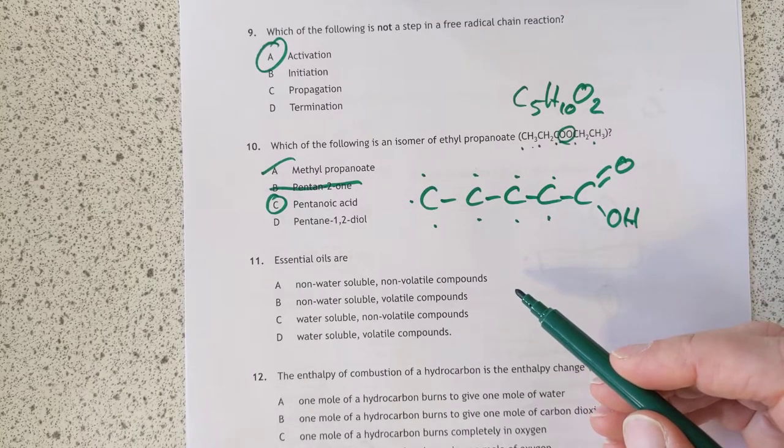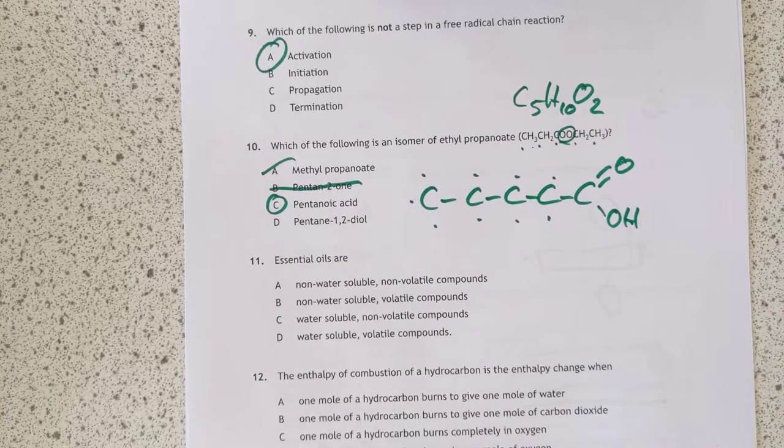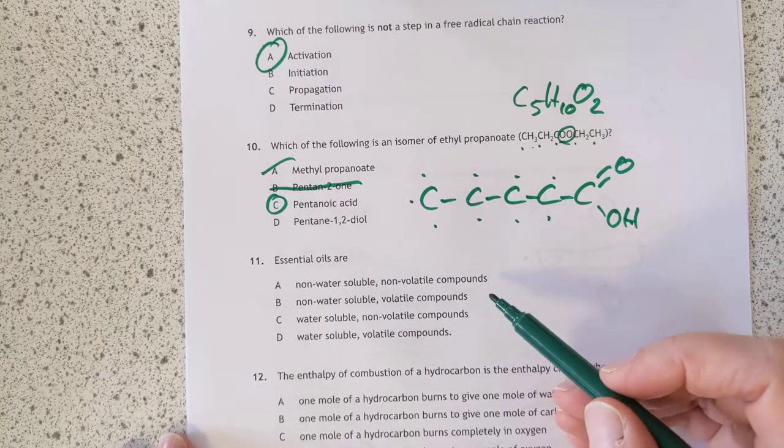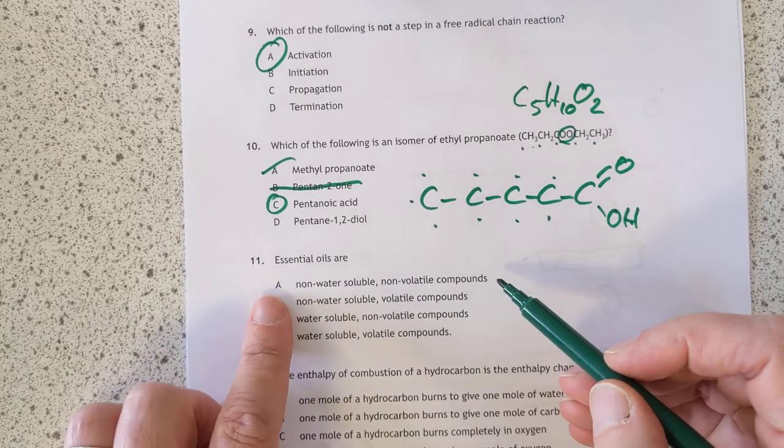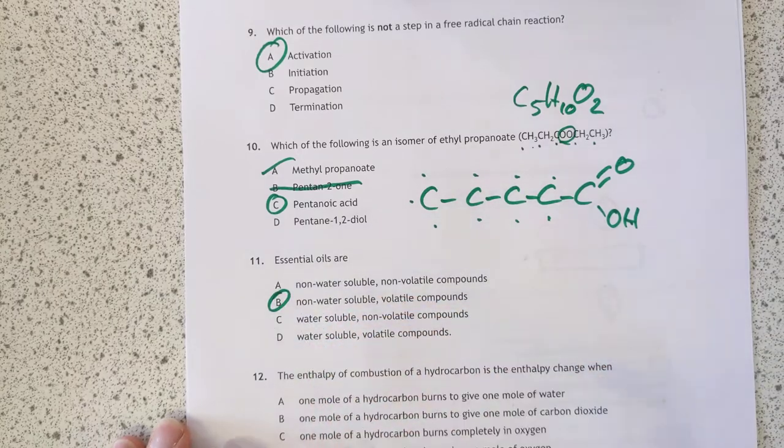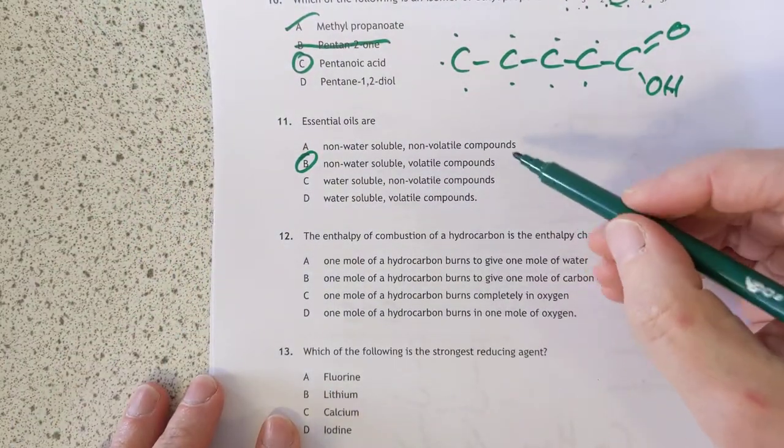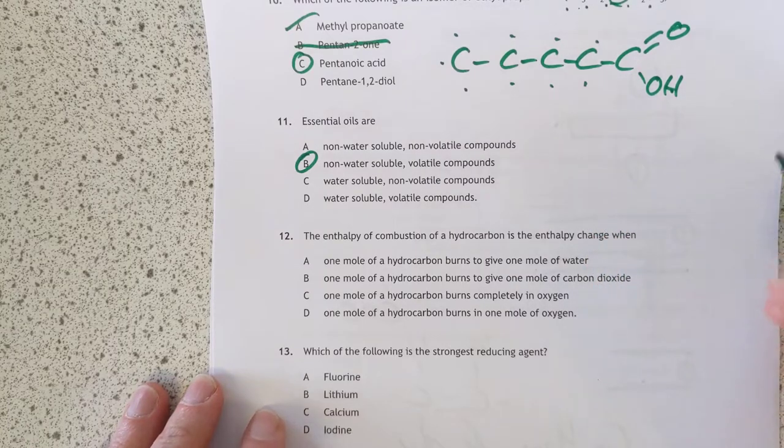Essential oils are. Simple KU question here. This is an odd multiple choice. It's varying so far between simple KU and a data book treasure hunt. Strange questions. Not much problem solving. They're non-water-soluble volatile compounds. Because they're all oils and they smell nice. That's why they're volatile. They evaporate so you can smell them.